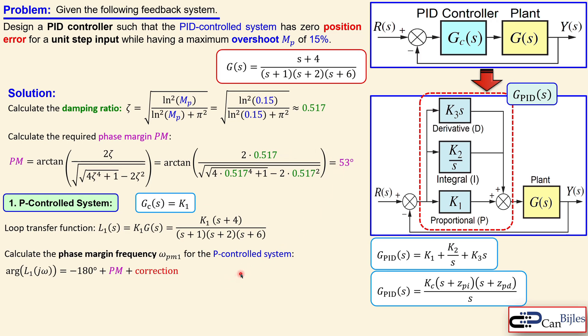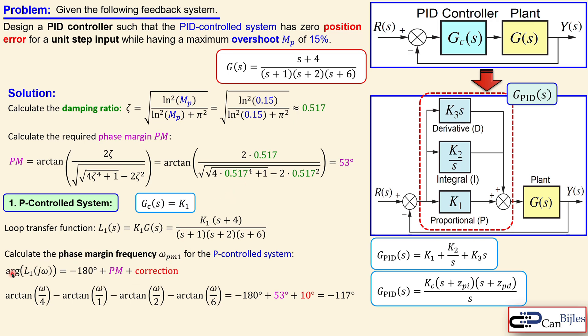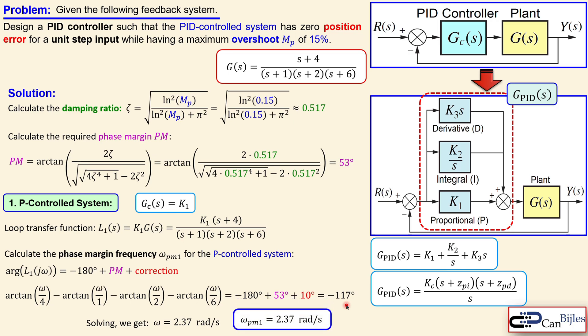We add 10 degrees as the correction parameter, giving a target of minus 117 degrees. Expressing the argument as arctangent terms in the j-omega domain — arctangent of omega/4 minus arctangent terms for each pole — and solving this equation numerically gives omega of 2.37 radians per second. This is the phase margin frequency for the P control system, which we use for future calculations.